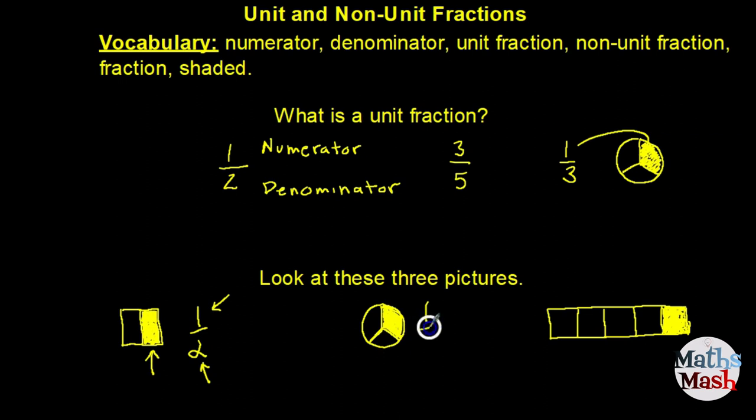In this picture if you said the unit fraction is one-third you're also correct. Well done! You can see in the picture there are three parts, but one of the parts is colored in. So that means that the number one is the numerator because it tells us how many parts are shaded. The number three is the denominator because it tells us how many parts we have all together.